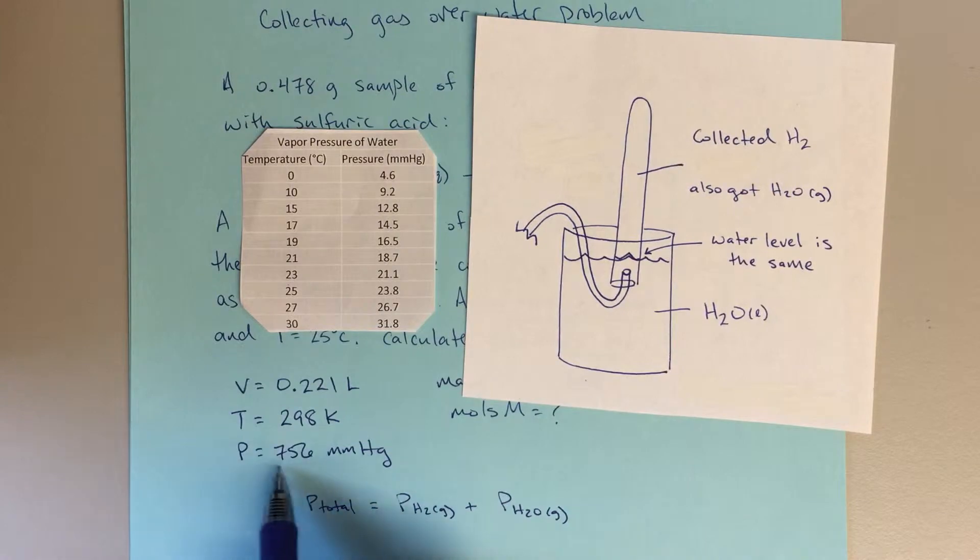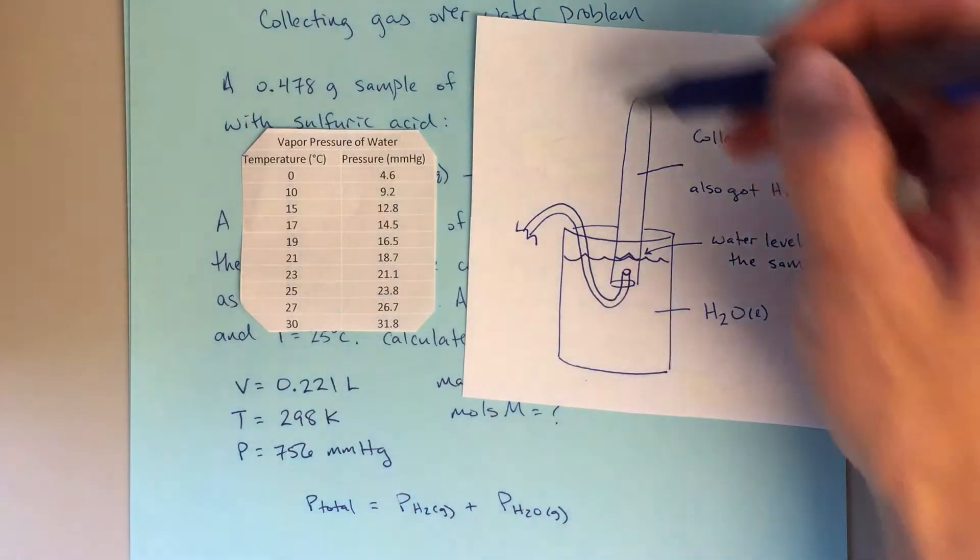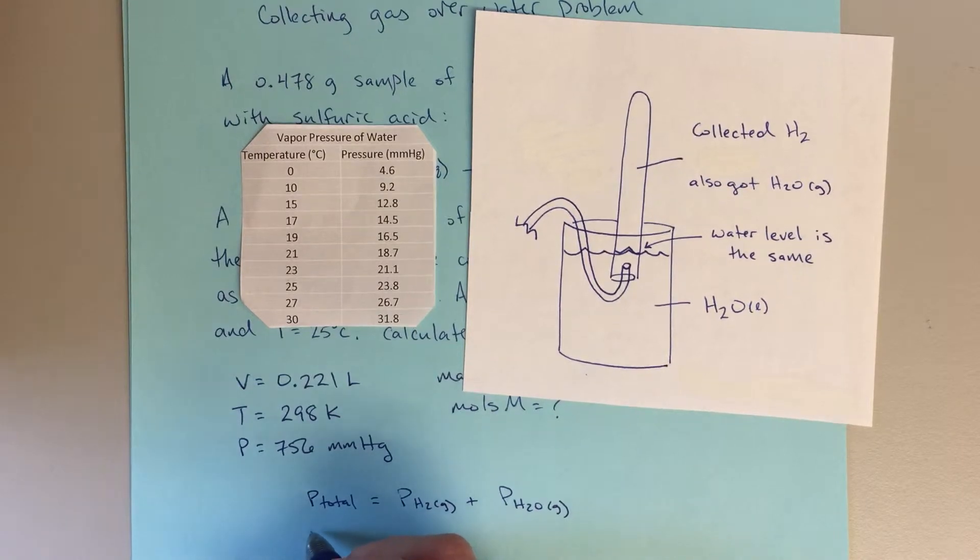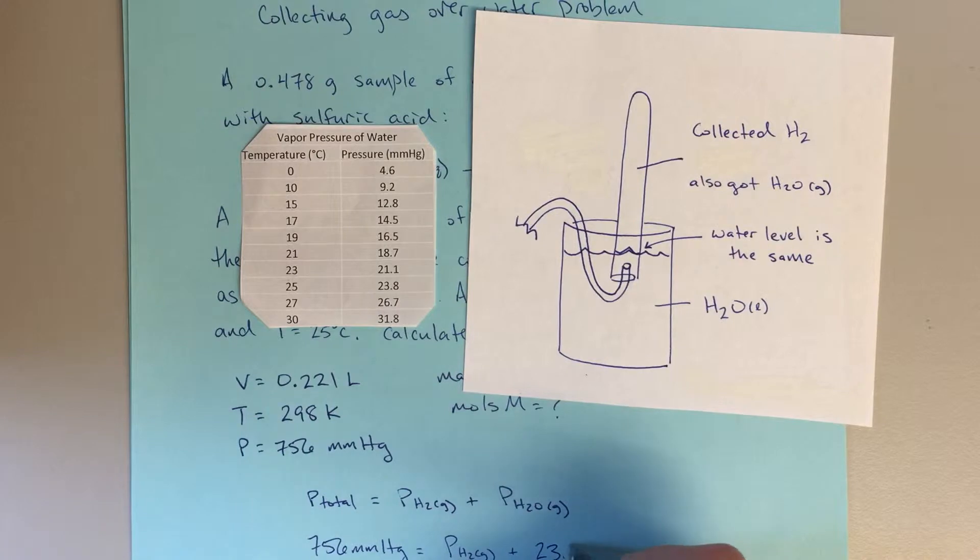So P total equals pH2 plus pH2O. And my P total, that's going to be this atmospheric pressure, because the pressure on the outside is going to be equal to the pressure on the inside. So P total will be 756 millimeters of mercury.